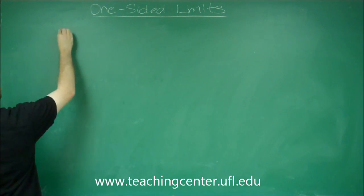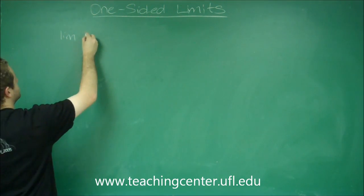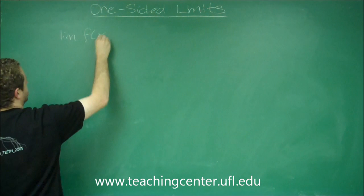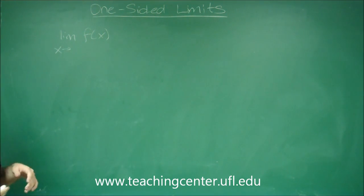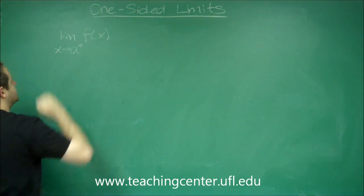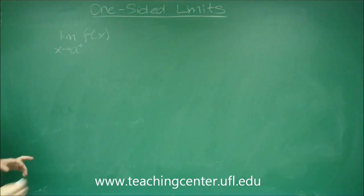So the notation would look like this. The limit of f of x as x approaches some constant, let's just say a. If you see a plus, that means from the right.